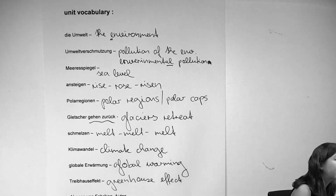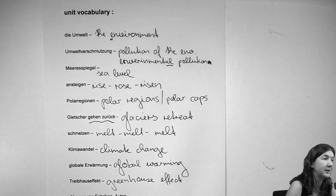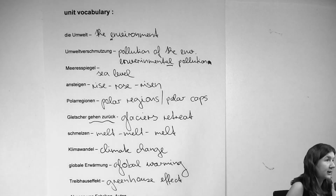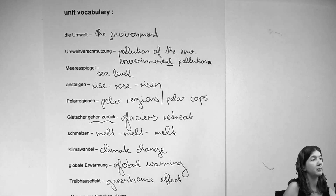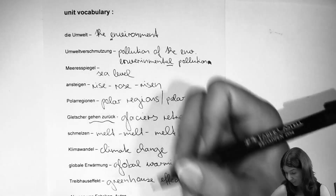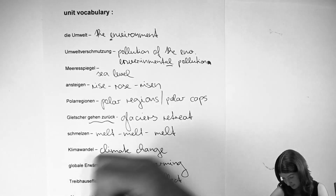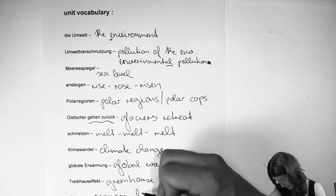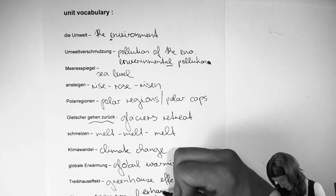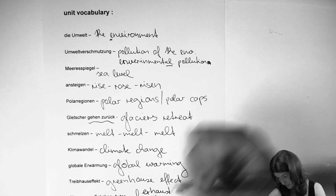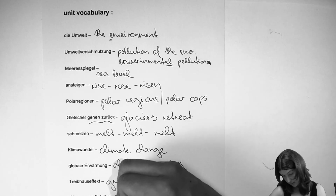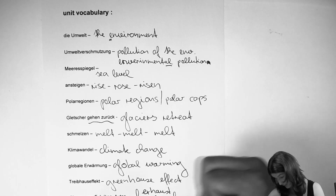You may want to look up the greenhouse effect. Then 'Abgase' — the fumes or the exhaust fumes from cars. And 'Fabriken' — the factories. You definitely know that one as well, but be careful, there is a false friend out there.